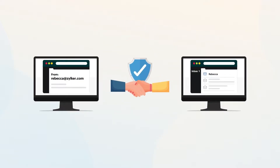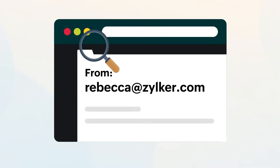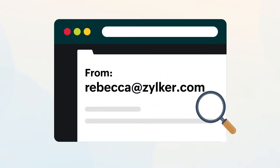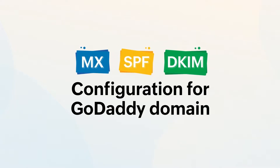Setting up DNS records — MX, SPF and DKIM — enables email delivery and secure email communication by establishing trust between the recipient server and your domain, thus authenticating your domain and verifying the sender is really you. In this video we'll walk you through the steps involved in setting up MX, SPF and DKIM records for your GoDaddy domain.